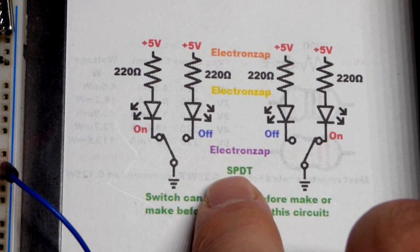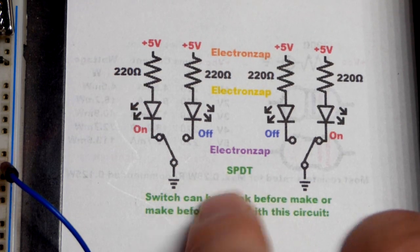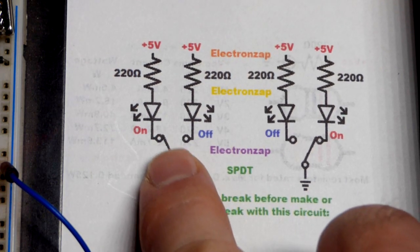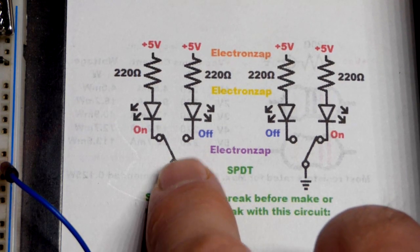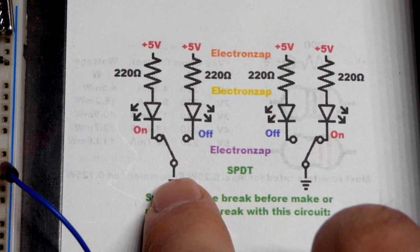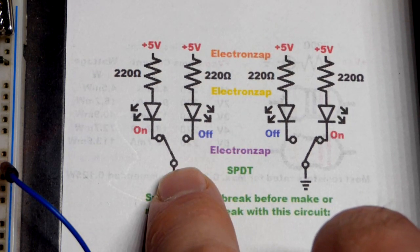There's also double pole double throw DPDT, all kinds of other versions, but this is what we got here, single pole double throw. So what it does is it takes that common terminal and it either connects to one of the other terminals or the other terminal, one or the other I should say.